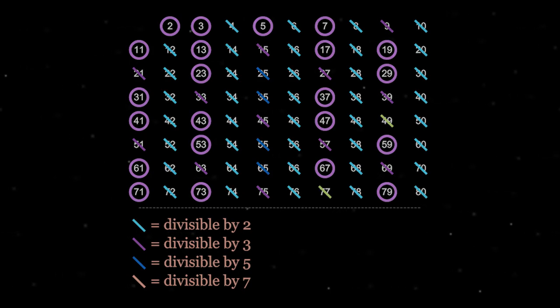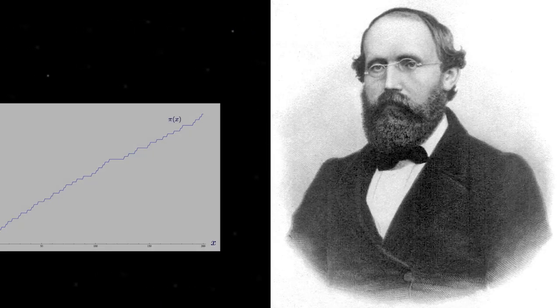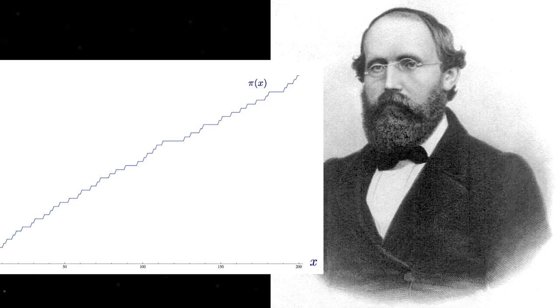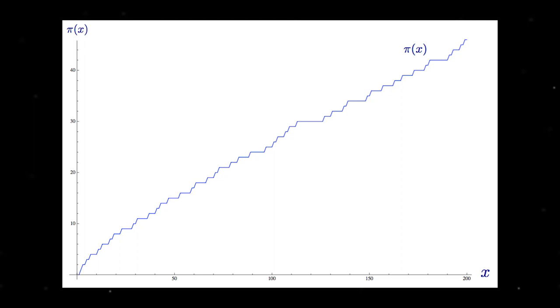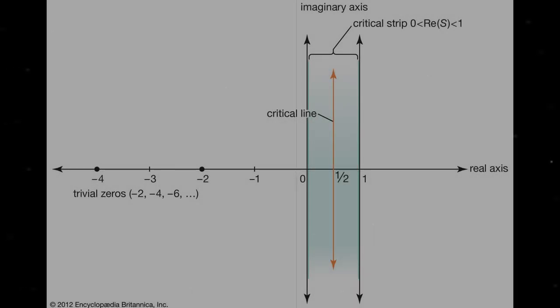However, Riemann spotted that if you modify Gauss's counting function, pi of x, to jump up by ln of that prime instead of 1, zeta zeros produce a harmonic that approximates this function. With every zero added, the harmonic improves, and Riemann showed that if you included all infinite zeros, the harmonic would be a perfect match, showing a further link between the primes and the zeta function.